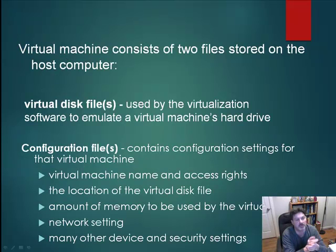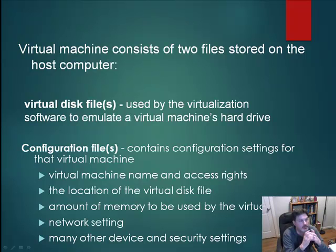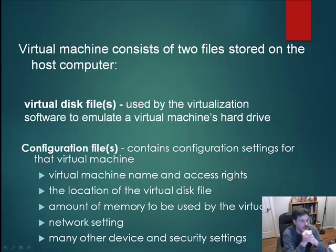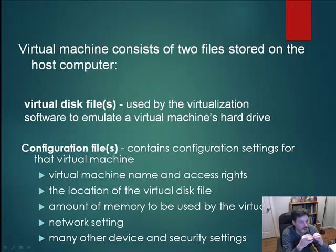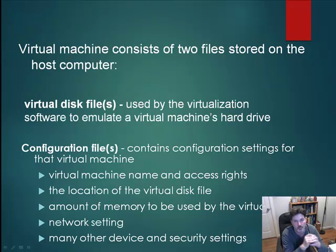Virtual machines really consist of two different types of files. Those files are stored on a host computer environment, usually in a folder representing the virtual machine. If I create a virtual machine, I want to make sure to move the entire folder, because it's going to contain multiple files necessary to run that VM. One set of files is the virtual disk files — they're used by the virtualization software to emulate the virtual machine's hard drive. When I build a virtual machine, I can attach or create a hard drive, and that hard drive is represented by one or more files. Virtual disk files can be dynamic or static in nature.